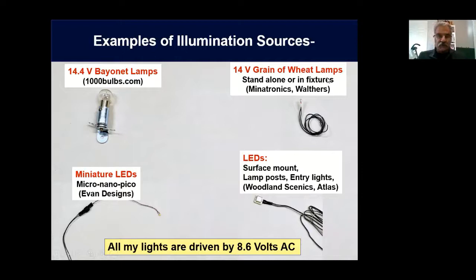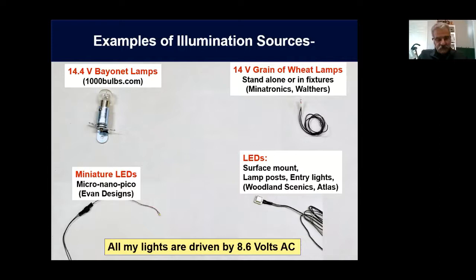Continuing with incandescent bulbs, there are the grain of wheat lamps or grain of rice lamps, which can be standalone or in fixtures like lamp posts and entryways. When you get to LEDs, I broke them up into two main categories. One are the so-called micro, nano, or pico LEDs — basically miniature and decreasing in size; Evan Designs is one supplier I use. And then there are more conventional LEDs such as what Woodland Scenics uses — surface mount, going in lamp posts and entry lights. ASLIS and many other suppliers have them too.